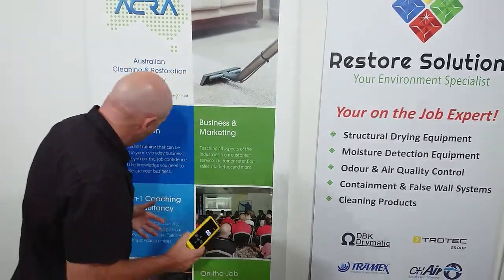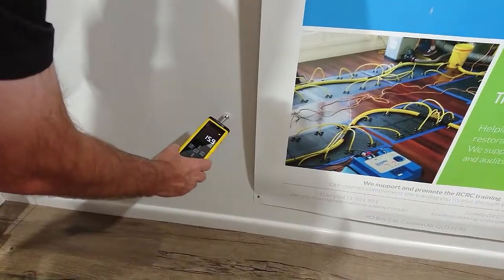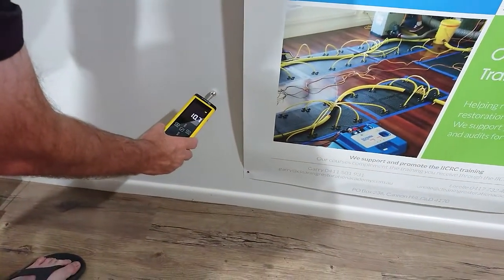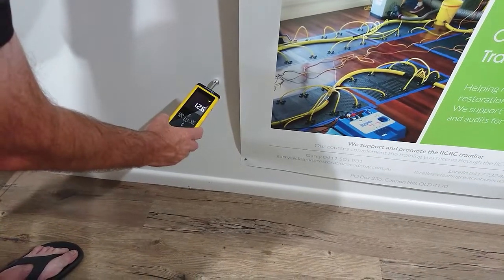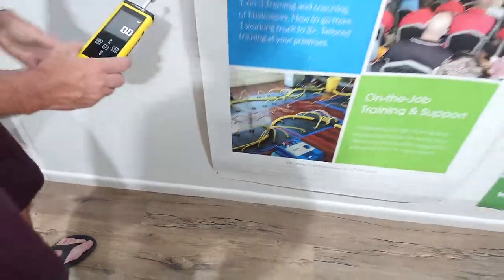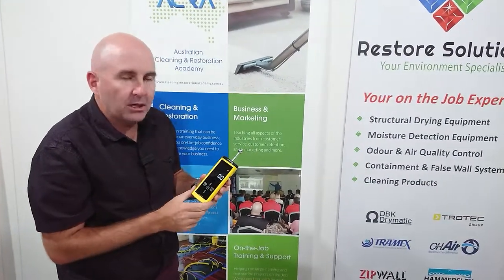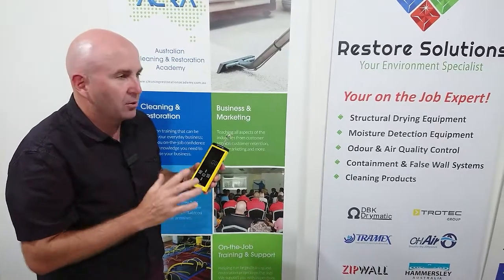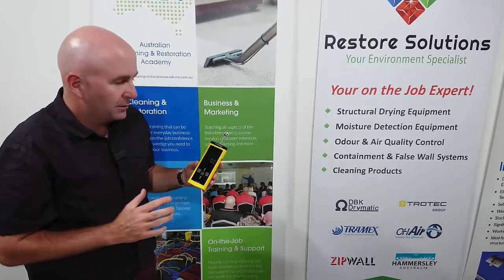Now if I check over this side and I've checked it and it's reading say 15, what am I picking up there? Oh we've got 10, I might have picked up the stud. I might be picking up a stud there. So it's not a percentage, it's a relative scale, it's all relative. Once you get to know this meter you're going to know that gyprock's roughly going to be between this and this. You're going to know hardwood timber is going to be a little bit different.